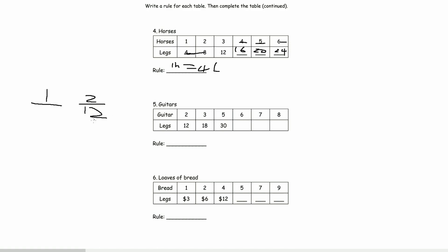What's half of 12? That would be 6. So 6, so we could be here that 1 guitar has 6. So, 6 times 6 is 36. 6 times 7 is 42. 6 times 8 is 48. Rule, 1 guitar is equal to, or has, 6 legs.